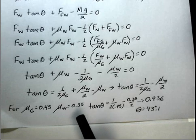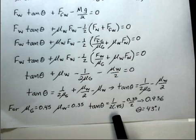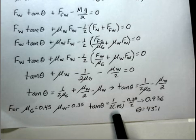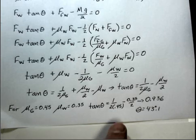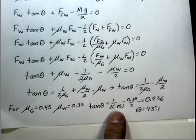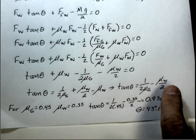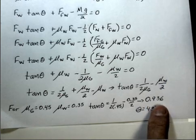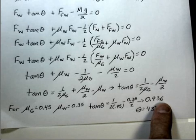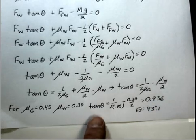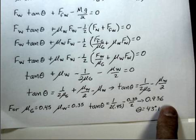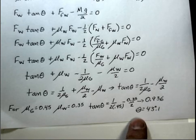We were given the coefficient of friction for the ground as 0.45 and for the wall as 0.35. Pause the video and use your calculator to compute tan θ: 1 over (2 × 0.45) minus 0.35/2. That gives 0.936. Taking the inverse tangent of both sides, we find the minimum angle for stability is 43.1 degrees.